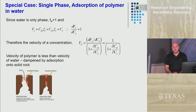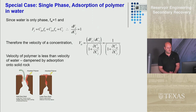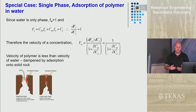This picture shows the adsorbed polymer. When you inject the polymer-water solution, some of it builds up as a deposited filter cake — an adsorbed layer — leaving concentration behind. This reduces permeability because the pore throats become smaller.